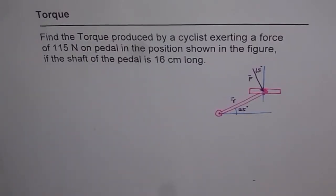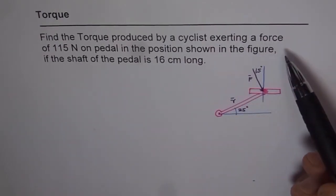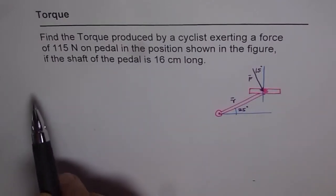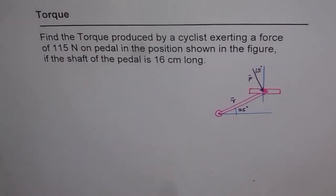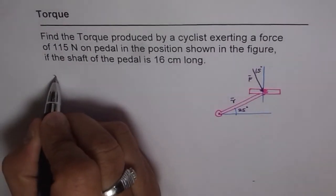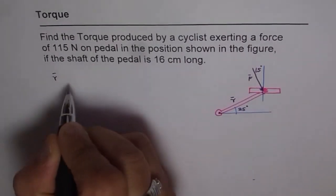Here is a good example on torque. It says find the torque produced by a cyclist exerting a force of 150 Newton on pedal in the position shown in the figure if the shaft of the pedal is 16 centimeter long. So what we are given here is that R which is this length from here to here is 16 centimeter.